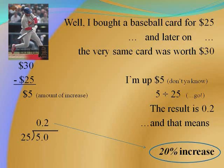I'm up five bucks, don't you know? Five divided by 25 goes. The result is 0.2 and that means 20% increase.